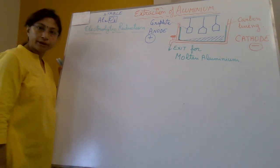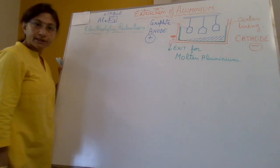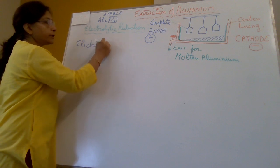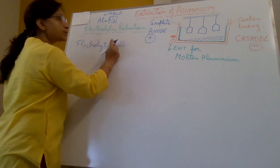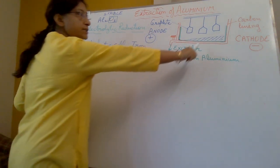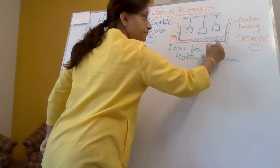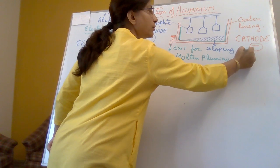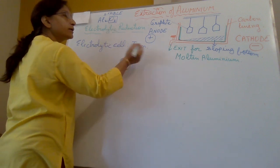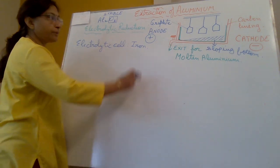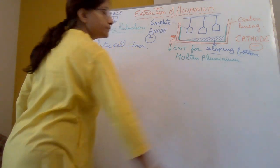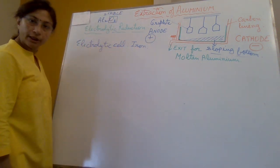The electrolytic cell for aluminium extraction is made up of iron and has a special sloping bottom to facilitate the exit of molten aluminium. The temperature inside is maintained at around 950 degrees C, which is the melting point of alumina, since we are using the electrolyte in its molten state.